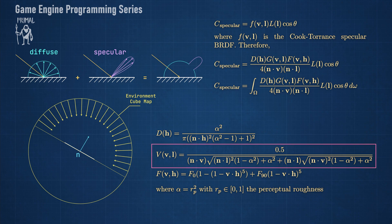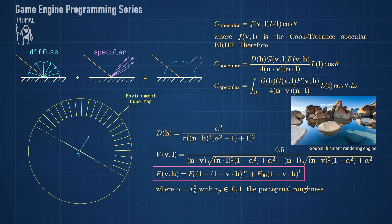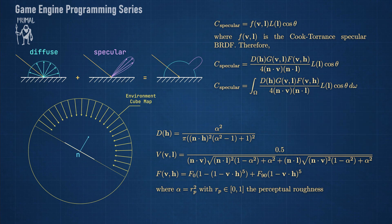This gives us the Smith correlated geometric function. Finally we have the Fresnel term which determines how much light is reflected at grazing angles. Here we used the Schlick function. Also remember that the alpha parameter is the square of the perceptual roughness which is a value between 0 and 1.